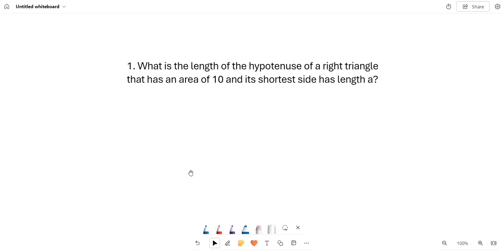So, this is week 48 Monday. Number 1 says, what is the length of the hypotenuse of a right triangle that has an area of 10 and its shortest side has length a?